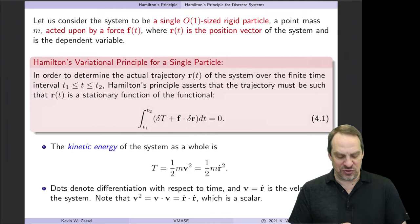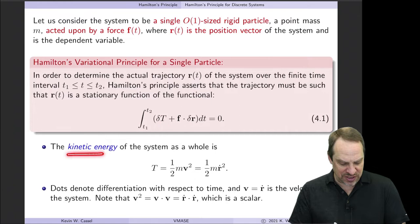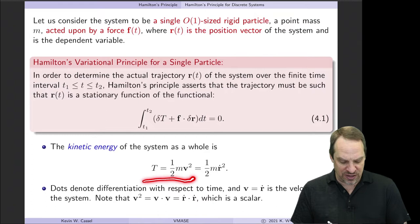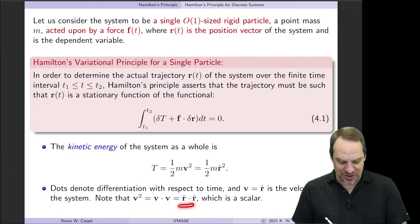This is a dot product of those two vectors. You may recognize this as a work-type term — force times a distance is work, and we'll get to that in a moment. The capital T here is the kinetic energy: one-half times mass times velocity squared. Velocity is the time rate of change of position, so it's ½m Ṙ². Dots here denote differentiation with respect to time, and V² = V·V = Ṙ·Ṙ.